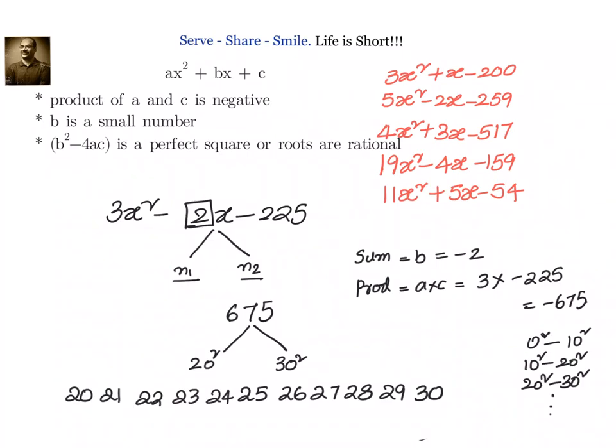But if the b value is slowly increasing, then we have to consider maybe 20 to 30, all of them. Look at what is our unit digit of the product. Unit digit of product is 5.